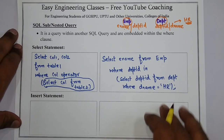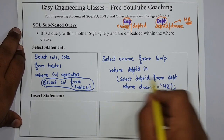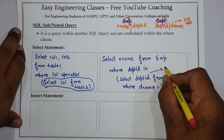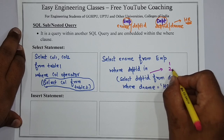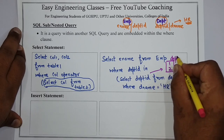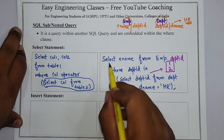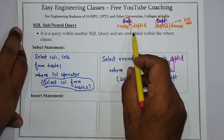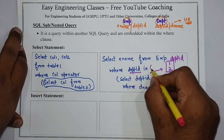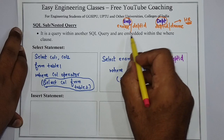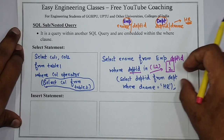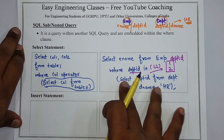What happens is: from the nested query, all department IDs that have department name as HR will come. Suppose it contains two department IDs — one and two — so the result set will contain department ID values one and two. Then the outer query becomes: SELECT e_name FROM employee WHERE department_id IN (1, 2). So all employee names whose department ID is either one or two will be returned. This is how you use a SELECT statement with nested subqueries.